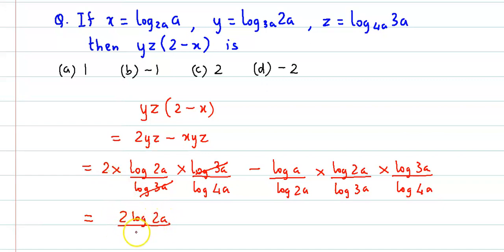This becomes 2 log 2a upon log 4a minus. Here log 2a cancels out, log 3a also cancels.